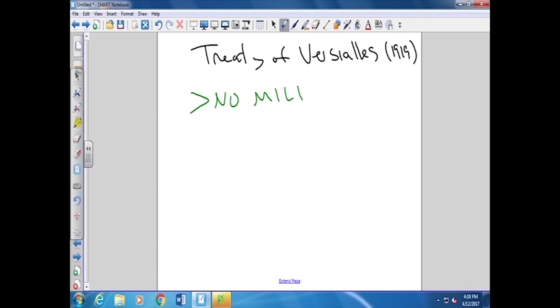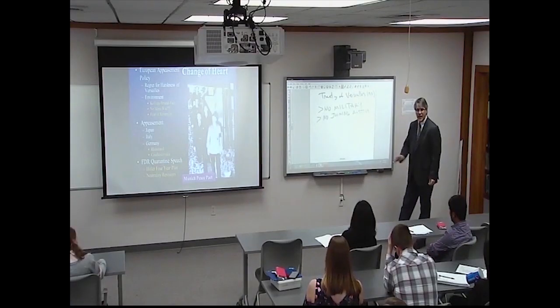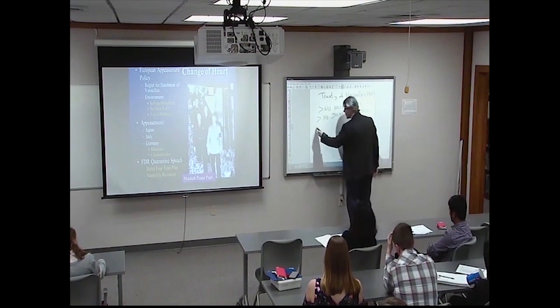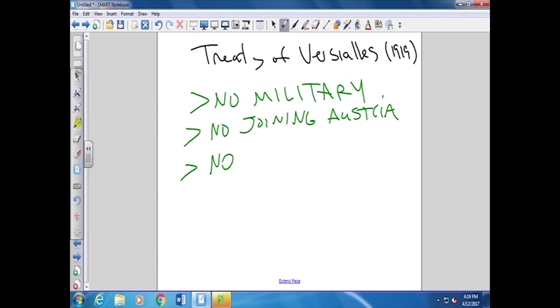Number one, no military. You can't do this again. Number two, no joining Austria again. Austria and Germany are two separate countries. They can't join. Thirdly, no entering Rhineland.